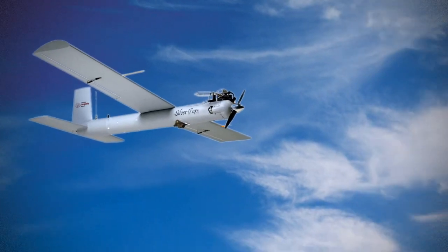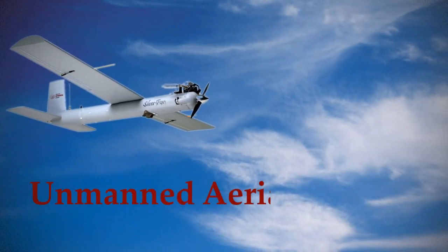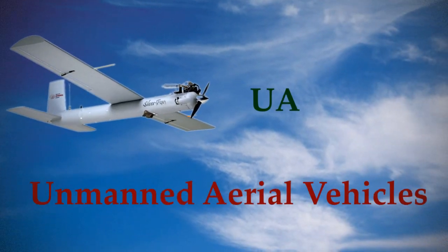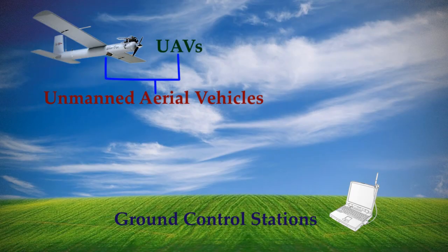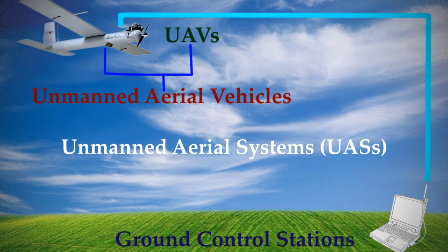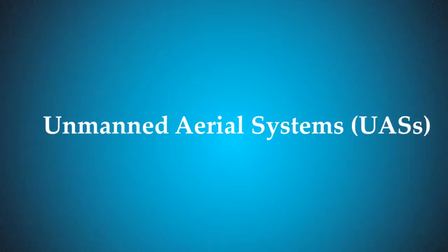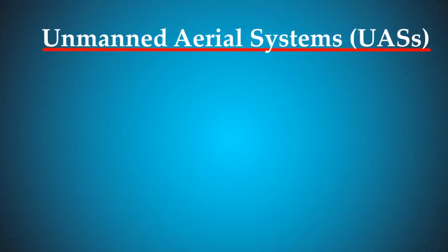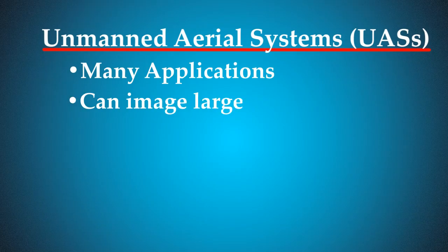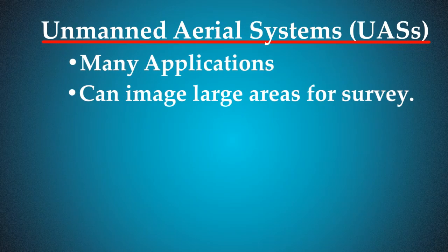Unmanned aircraft, commonly called unmanned aerial vehicles, UAVs, when combined with ground control stations and data links, form unmanned aerial systems, UASs. UASs pose a wide variety of applications for civilian use, including imaging large areas for survey.